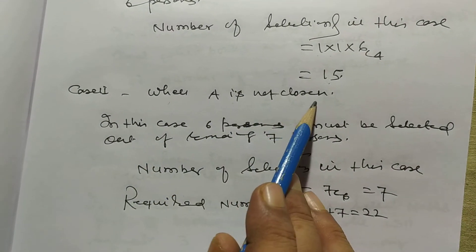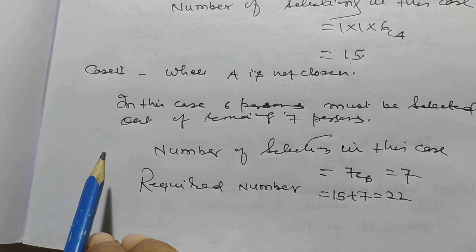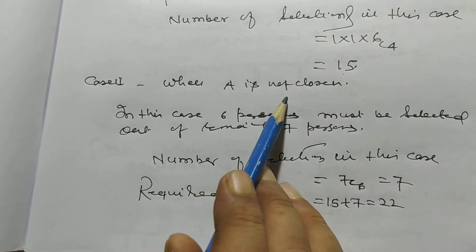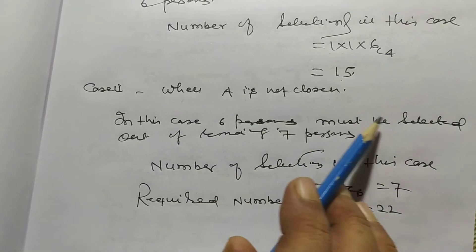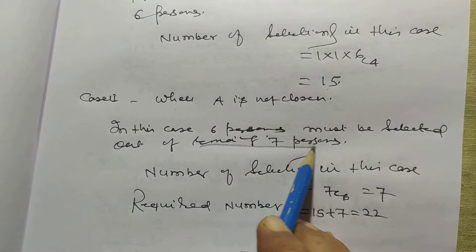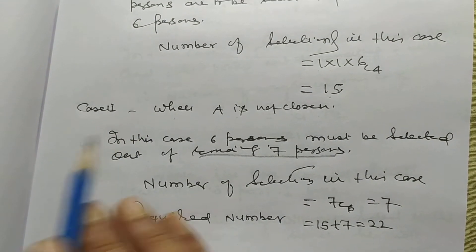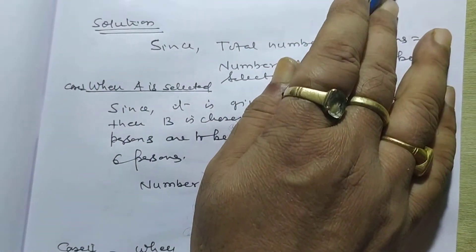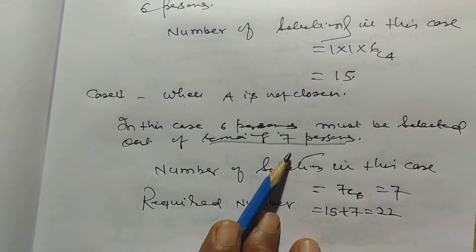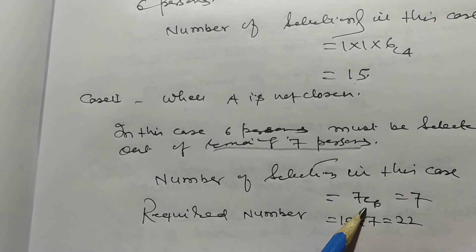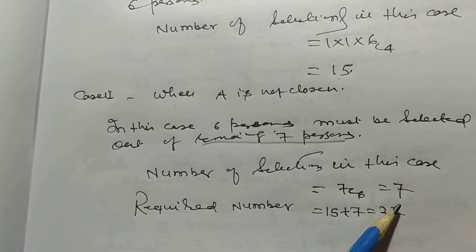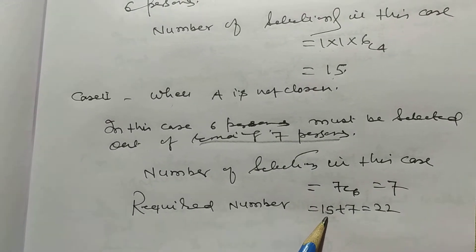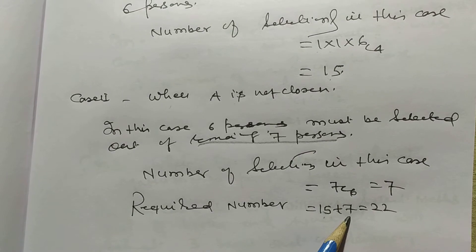When A is not chosen, we exclude A, so the number of persons becomes 7. We must select 6 persons out of the remaining 7, giving 7C6 = 7. Therefore, the required number of ways is 15 + 7 = 22. This solves problem number 1.